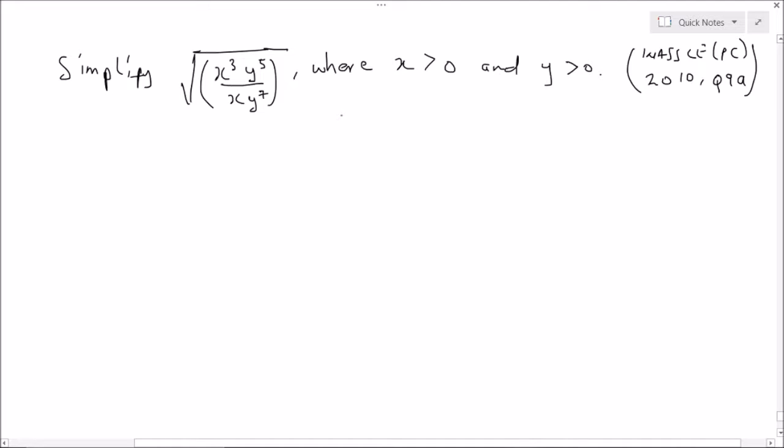Hello everybody, welcome to my video tutorial. In this program we have to simplify the square root of (x³y⁵)/(xy⁷), where x > 0 and y > 0. So we write that: root of x³y⁵ over xy⁷.